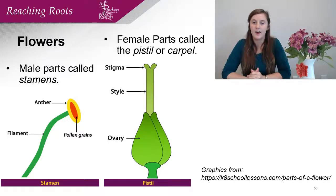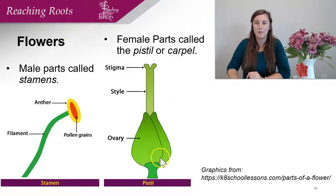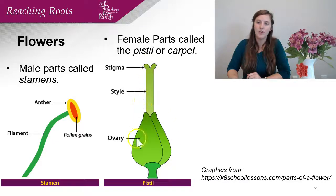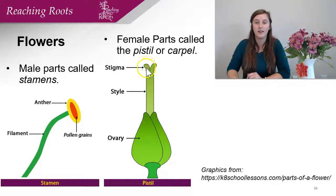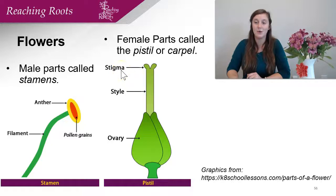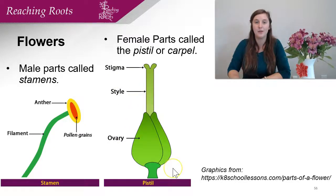As for the female parts, this is called a pistil. You can remember it's called a pistil because if you look at the shape it kind of looks like the shape of a pistol or gun. At the top we have the stigma, then we have the style, and then at the base we have the ovary. The stigma is where the pollen lands — it's sticky, so remember: sticky stigma. Inside the ovary there are ovules.